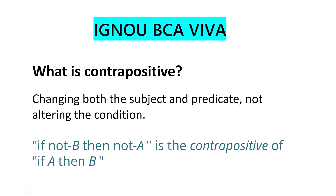Coming to the next question: what is Contrapositive? It means changing both the subject and predicate without altering the condition. If A then B — put negation on both, and swap them: not B implies not A. For example: 'if bus comes, I will go to the market' becomes 'I will not go to the market if bus does not come.' So 'if not B then not A' is the Contrapositive of 'if A then B'.